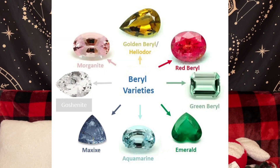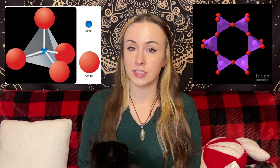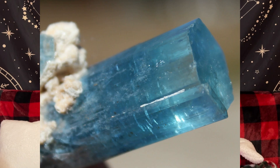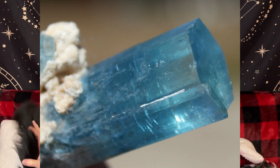Today's crystal chat is about beryl. Beryl is a beryllium aluminum silicate mineral that includes aquamarine, emerald, morganite, heliodor, and other varieties. Beryl is a cyclosilicate, meaning that the silicate tetrahedra that make up its crystal structure are arranged in rings. If you want to learn more about crystal structures, I have a video called Geology 101 for Crystal Lovers.